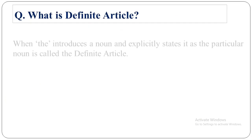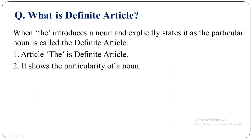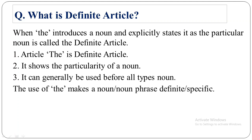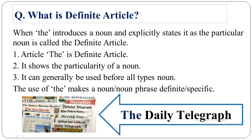What is definite article? When 'the' introduces a noun and explicitly states it as a particular noun, it is called the definite article. Only 'the' is the definite article. It shows the particularity of a noun and can generally be used before all types of nouns. The use of 'the' makes a noun or noun phrase definite and specific. For example, the name of the newspaper is Daily Telegraph, but we must write 'The Daily Telegraph' because 'the' is used before the name of a newspaper.